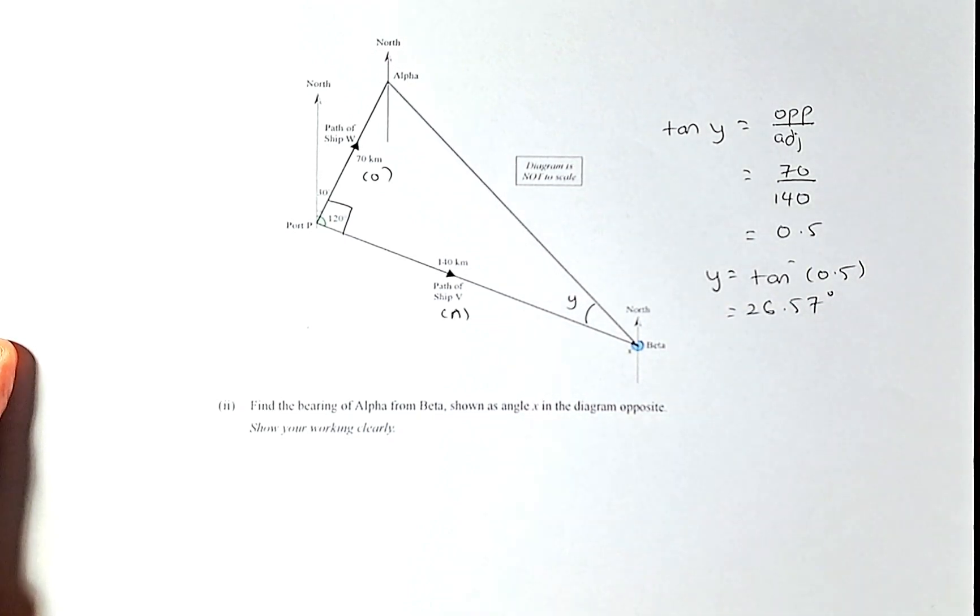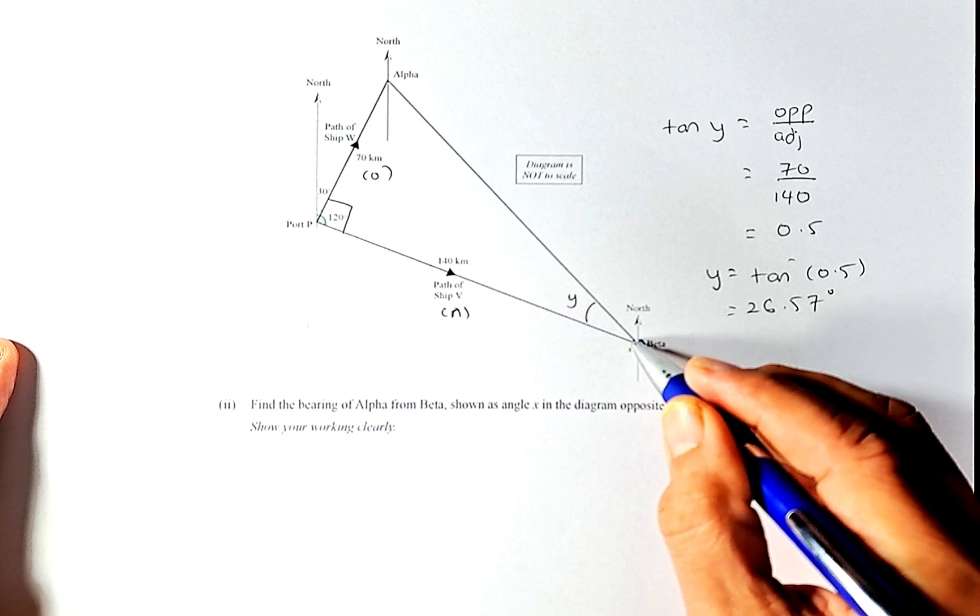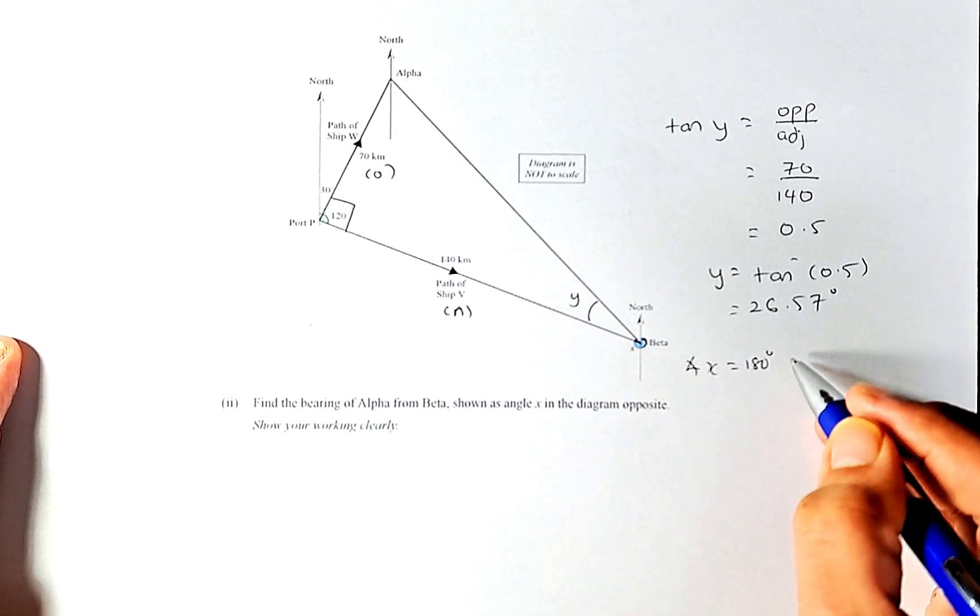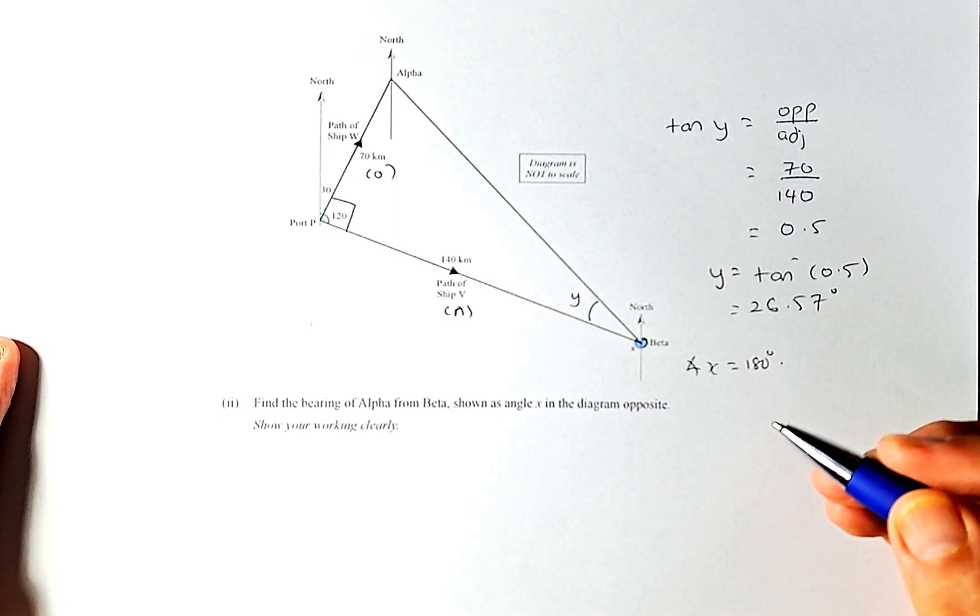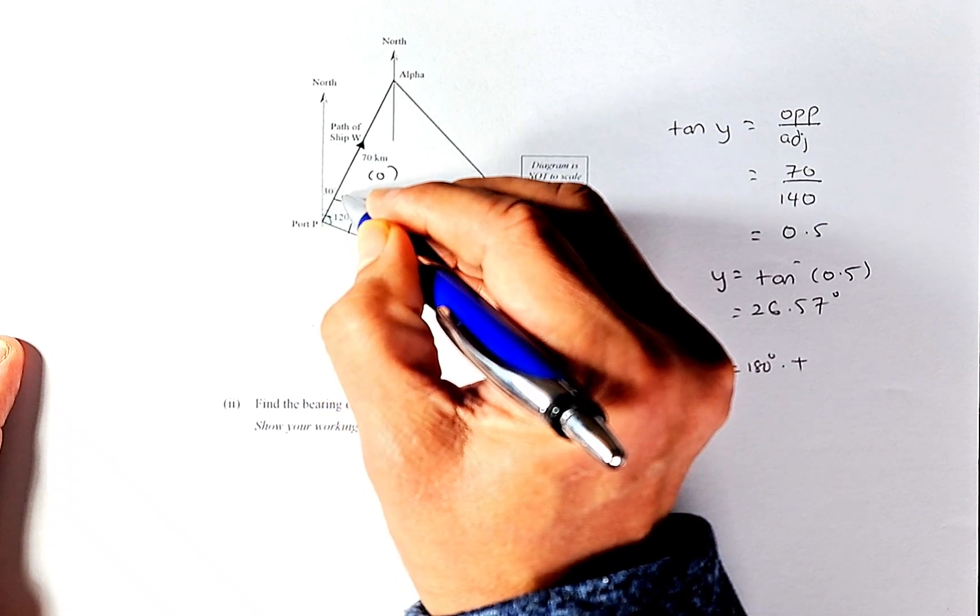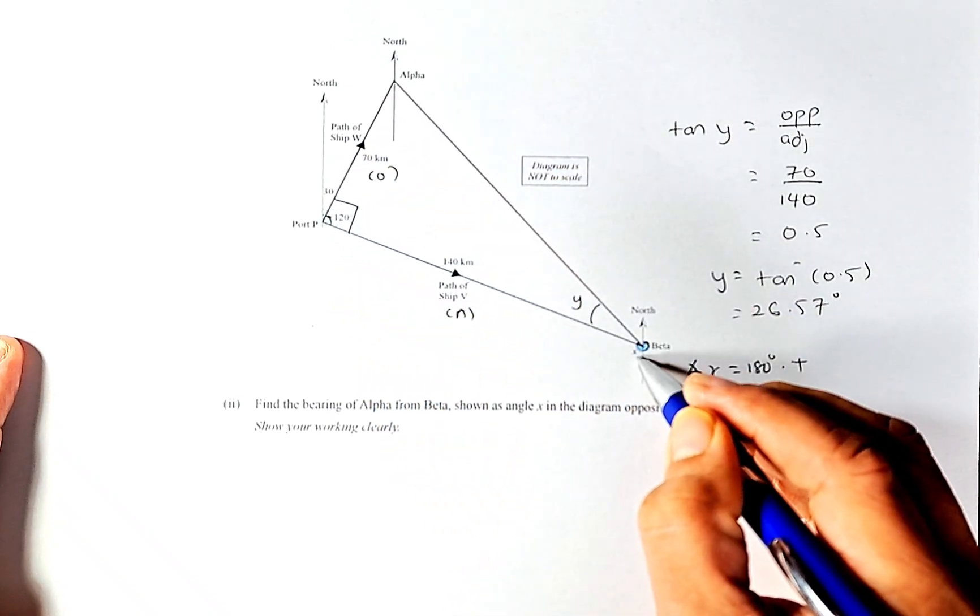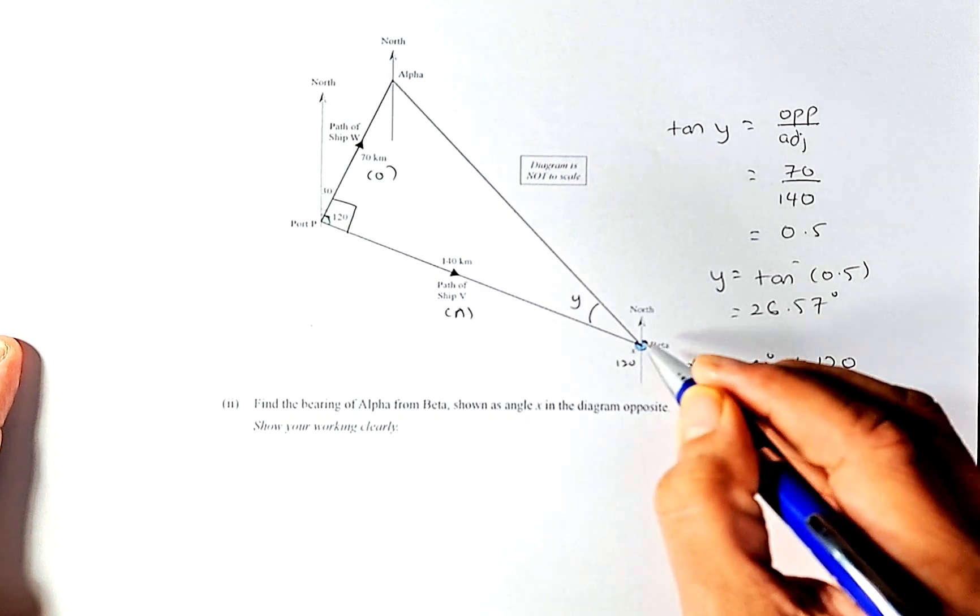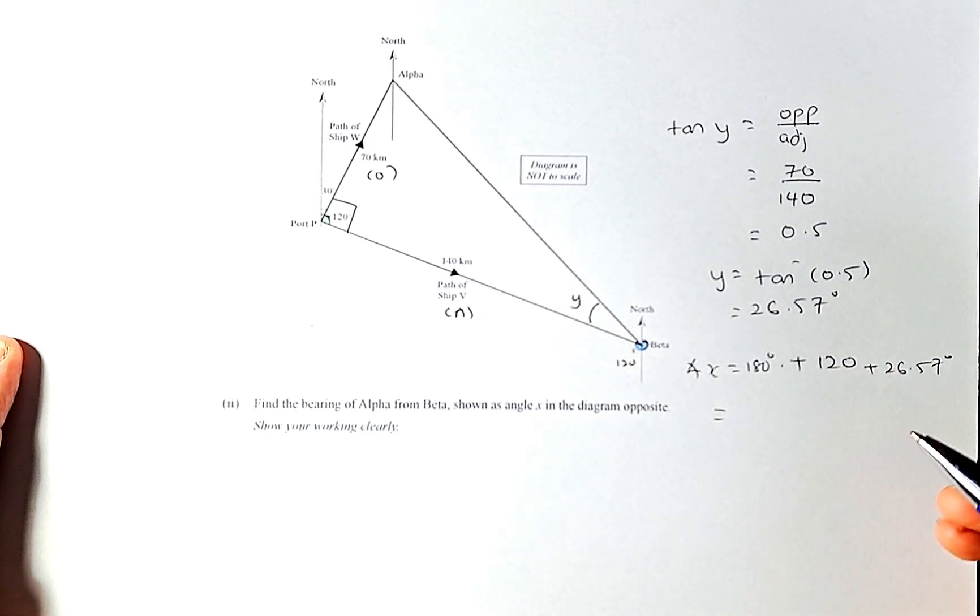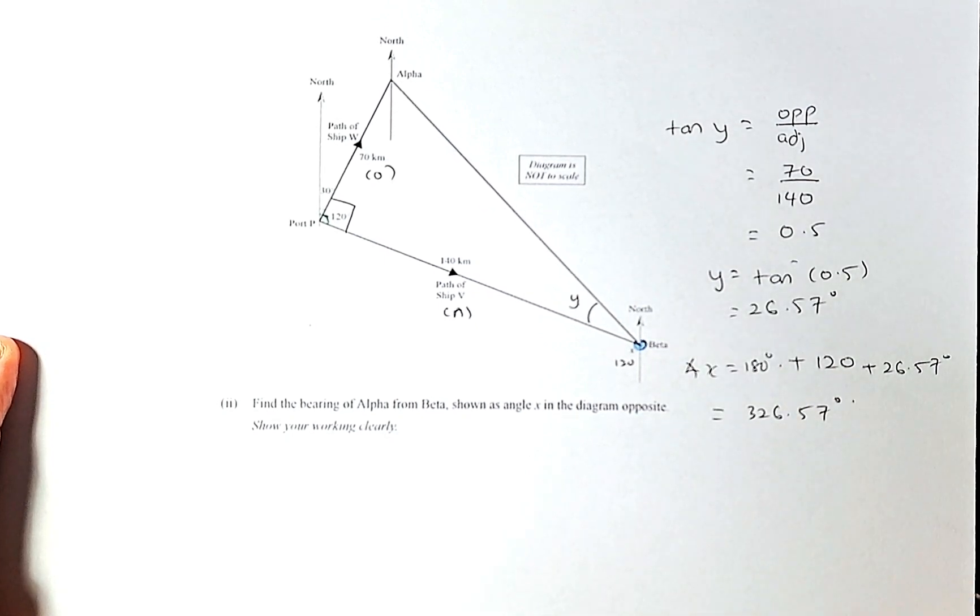But the question did not ask for angle y, they asked for this angle x from the north. Angle x is going to be 180 plus 120 because using alternate angle, this angle here is going to be 120. So x is going to be 180 plus 120 plus the y we found to be 26.57 degrees. If you add them all up the answer is going to be 326.57 degrees. That is the answer for question 1c part 2 and that is the merit in this paper.